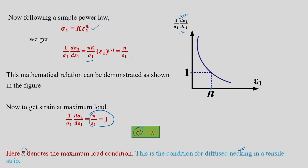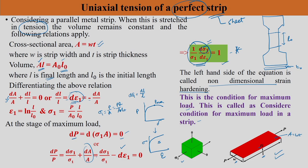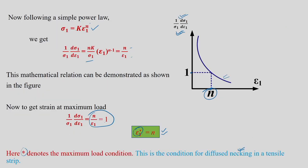When this fellow equals 1, you draw a horizontal line; it will meet the x-axis and you will see ε₁ = n as per this particular equation. When you do a tensile test, get true stress-strain data, get this particular data, and you plot it with respect to ε₁, you will get a similar graph. Whenever this becomes 1, ε₁ will equal n. The instability conditions for a tensile strip are: (1/σ₁)(dσ₁/dε₁) = 1, or if you follow power hardening law σ₁ = k·εⁿ, then ε₁* = n. These two equations describe the condition for diffuse necking in a tensile strip.